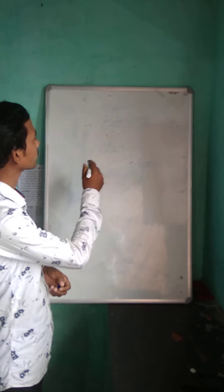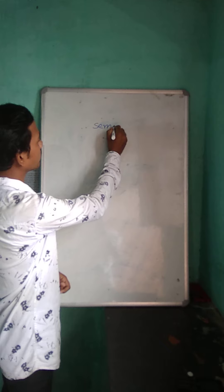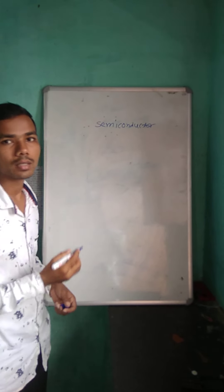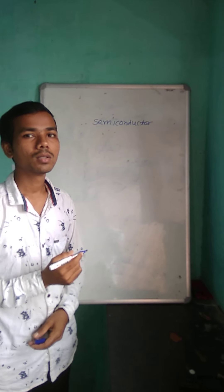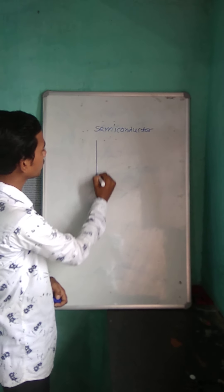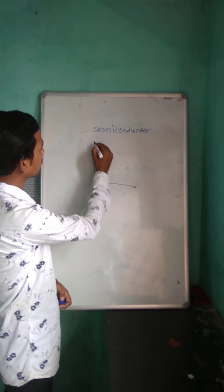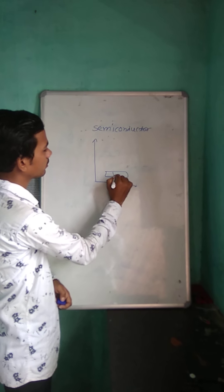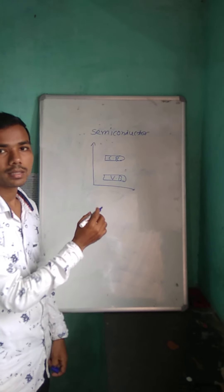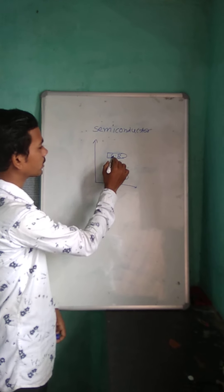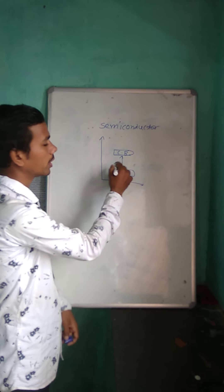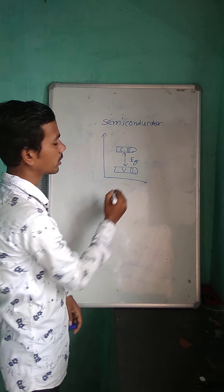Today's topic is Semiconductor. What is semiconductor? Semiconductor is a device that lies between conductivity and insulator. This is valence band and this is conduction band. Electron is easily moved from valence band to conduction band and there is a very small gap in between valence band and conduction band. That is called semiconductor.